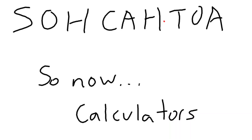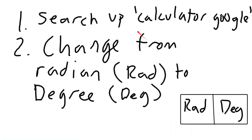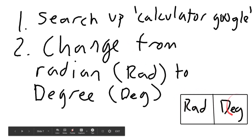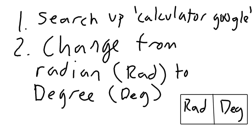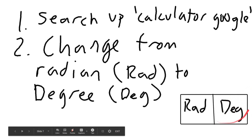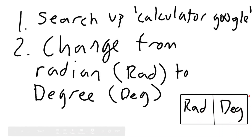Moving on to calculators — it might be hard to get used to at first but it'll get easier. There's an online calculator and a physical calculator; I'll do the online one for now. Search up 'calculator google.' The first step is you have to change from radian to degrees — that sign is at the top left of the calculator. You always have to change it from radian to degree or else your answers will be really off.